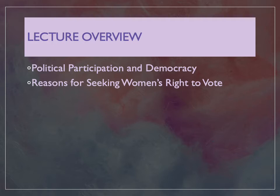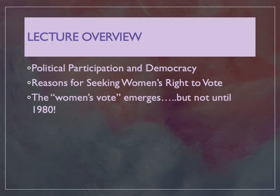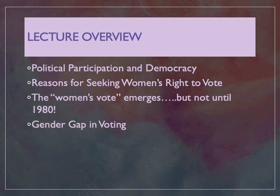Next, we'll look at the varied reasons why women sought the right to vote and why some women opposed the ratification of the 19th Amendment. We'll examine the women's voting bloc, why it didn't emerge until well after the 19th Amendment passed, and conclude by looking at the gender gap in voting—setting the stage for next week.